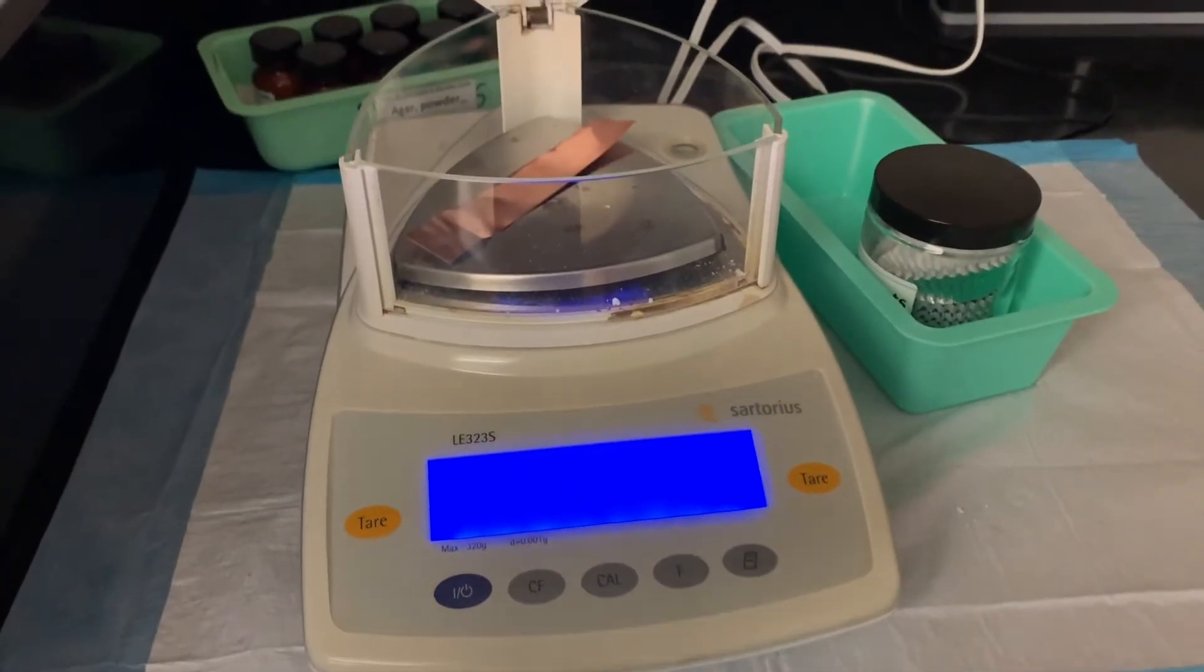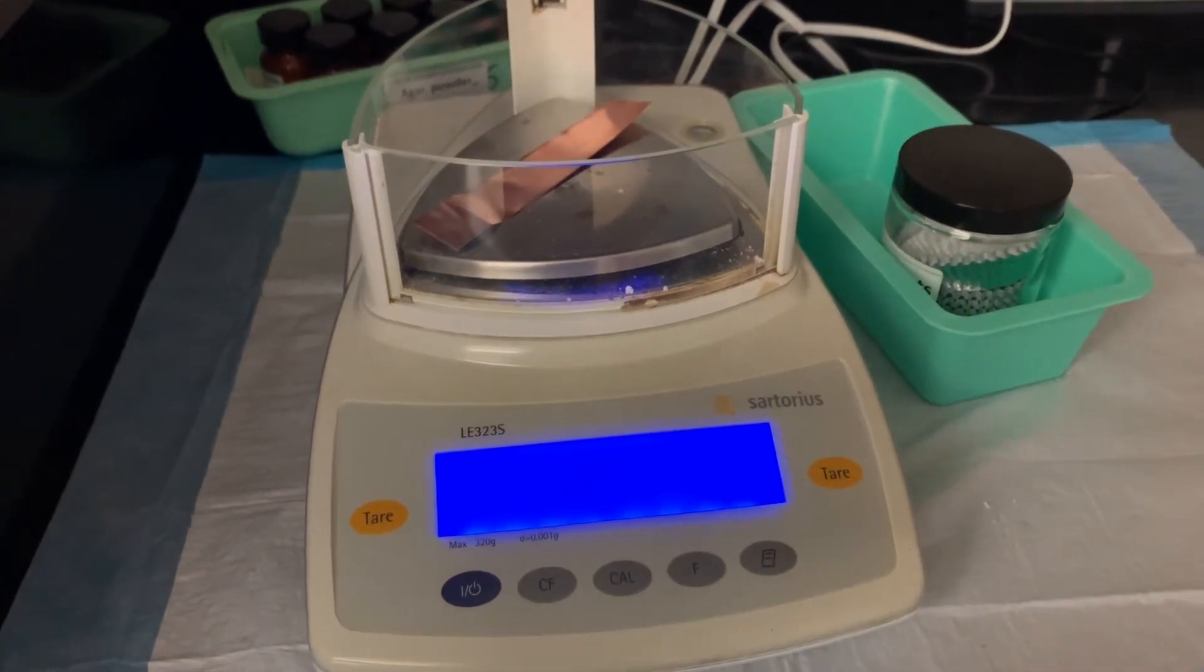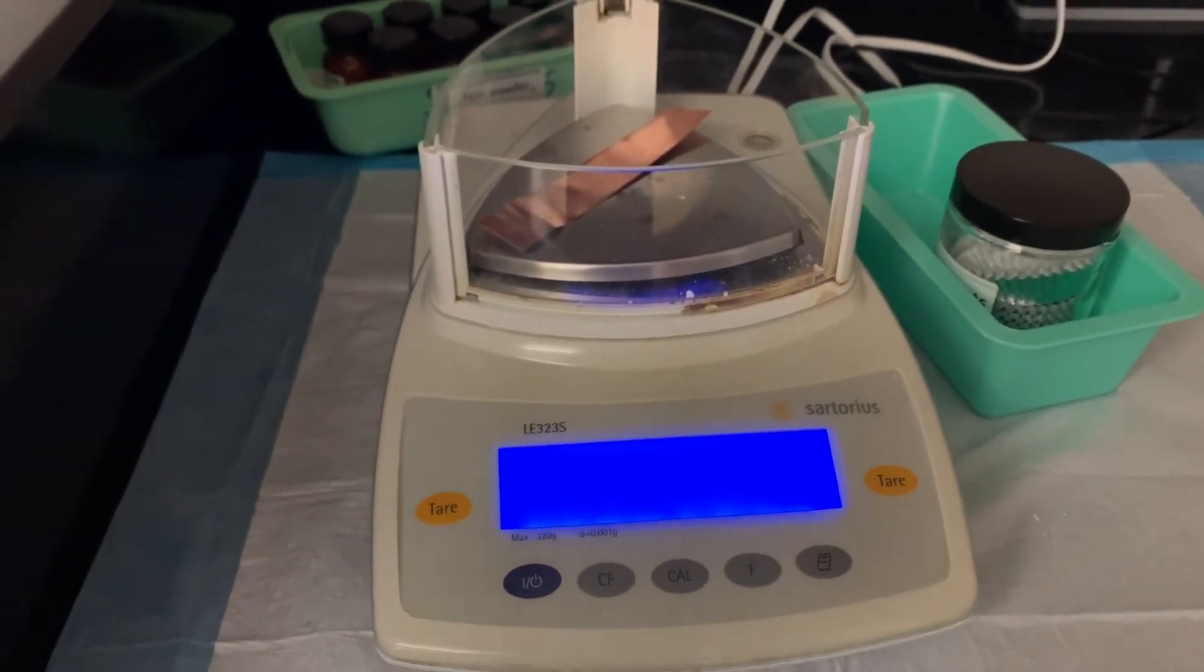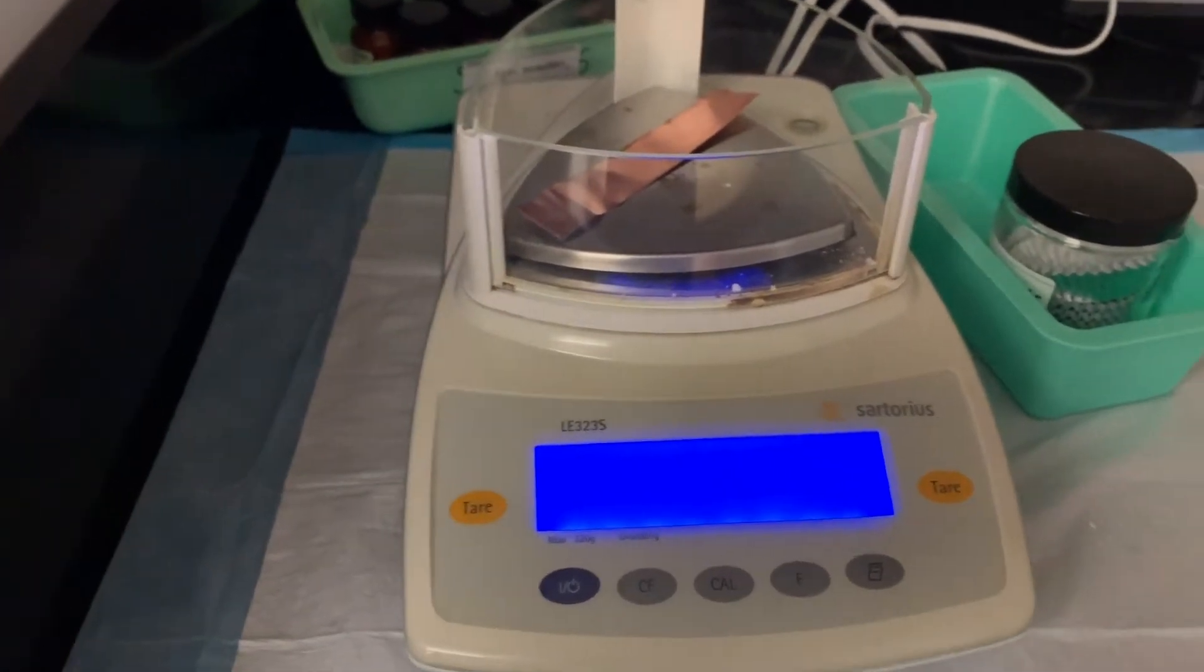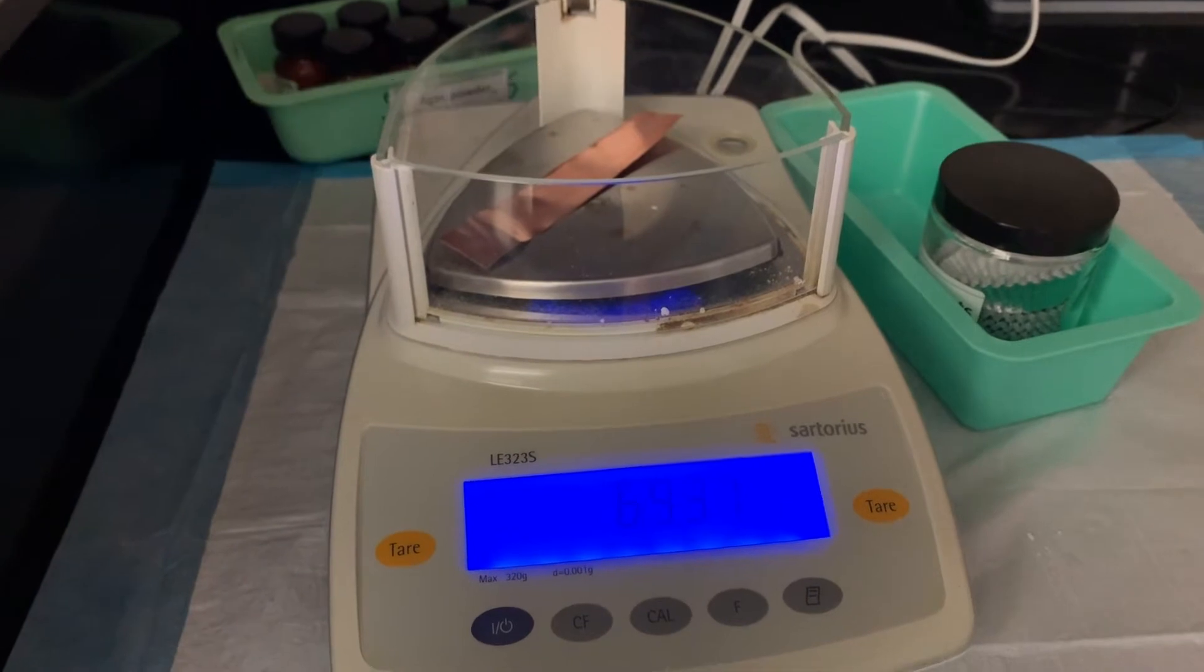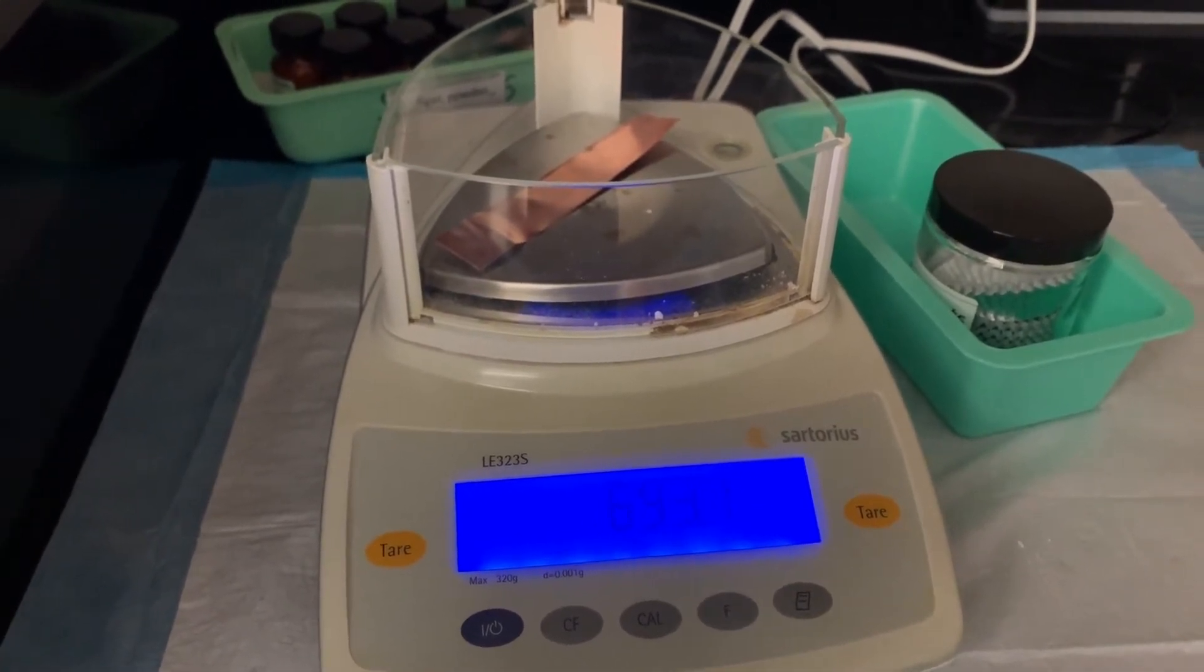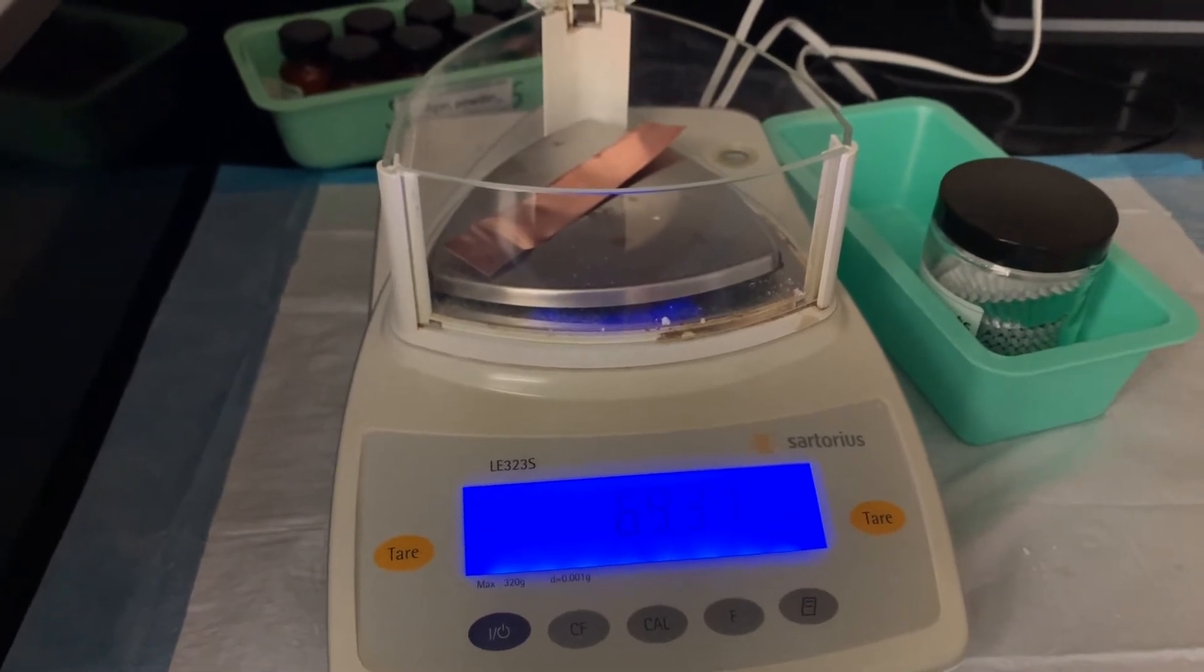I'm measuring the mass of the unplated copper before the experiment, and the mass is 6.937 grams. You're going to want to write that as the mass of the unplated copper. I soaked it into HCl and dried it off.